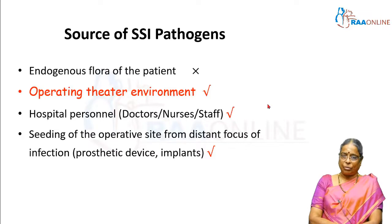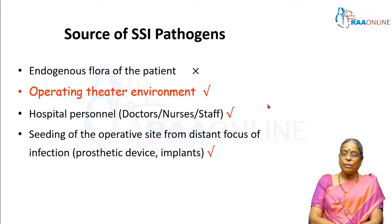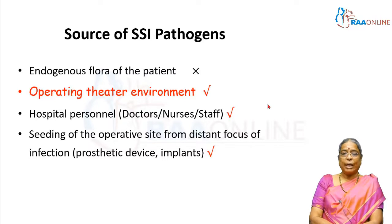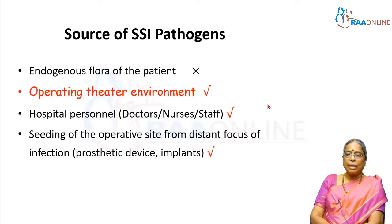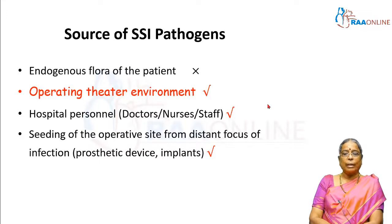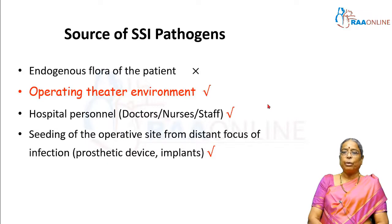If you look at the source of the surgical site infection pathogens, one source is the endogenous flora of the patient, about which we cannot do anything much — all of us have normal flora. The next thing is the operating theater environment, about which we can take control. The third factor is the hospital personnel — the doctors, the nurses, and the other staff in the operating room, about whom we also have some control. The fourth cause is the seeding of the operative site from a distant focus of infection, for example a prosthetic device or implant-associated infection. This can be taken care of by looking for a distant focus of infection in the patient and treating it preemptively before a planned surgery.